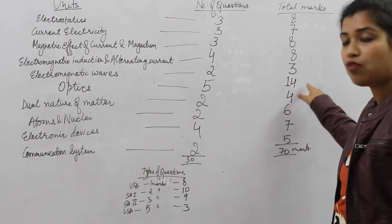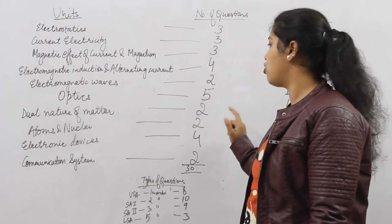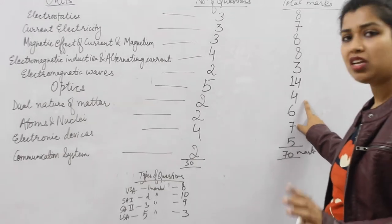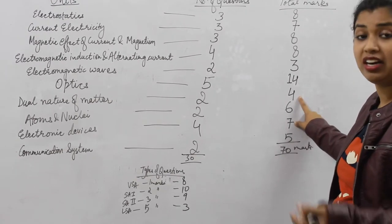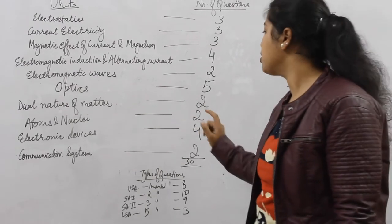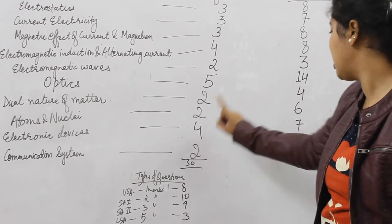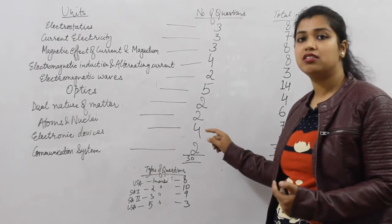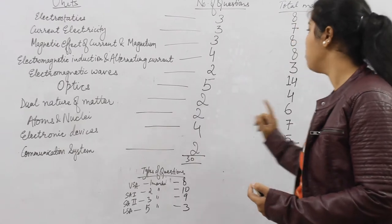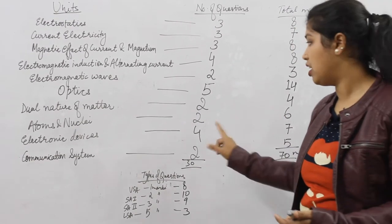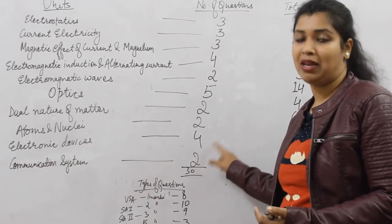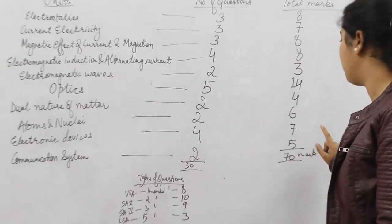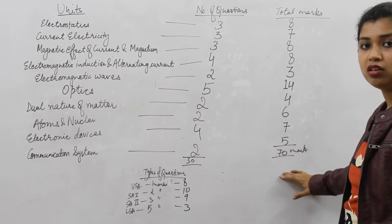That is why the weightage given to optics is 14 marks. Dual nature of matter: two questions will be asked and the weightage given is four marks — this is a relatively easy chapter and fewer marks are given to it. Atoms and nuclei: two questions will be asked and the weightage is six marks. Electronic devices: four questions will be asked and the weightage is seven marks — this again becomes an important chapter as the maximum number of questions will be asked from it. Communication systems: two questions will be asked and the weightage given is five marks.